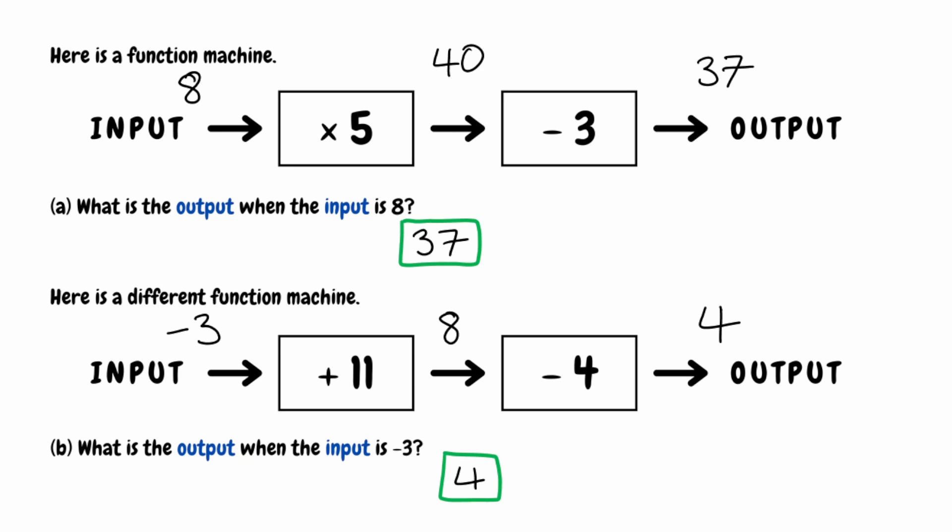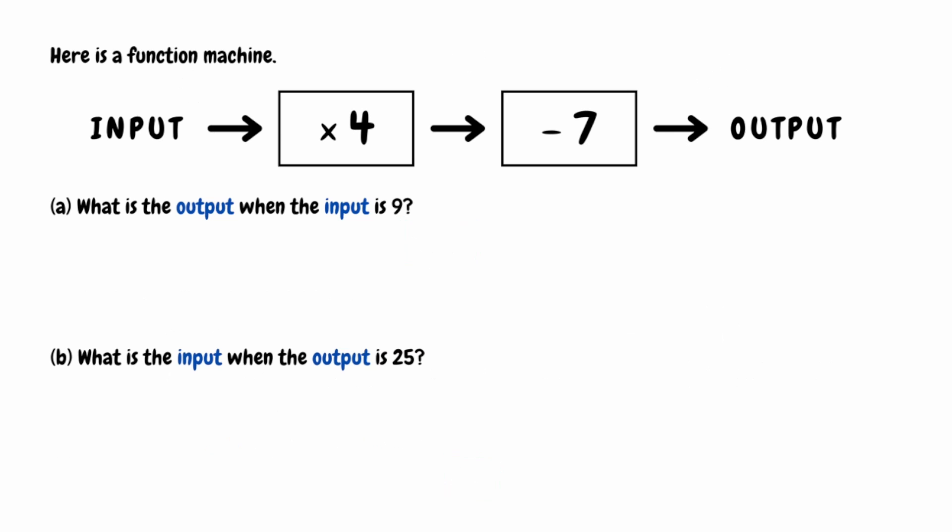That's all we need to do when we're looking for an output of a function machine — start with the input and follow the steps from left to right. Let's have a look at another example. We've got a new function machine: we start with our input, we then multiply by 4, we then subtract 7, and that gives us our output.